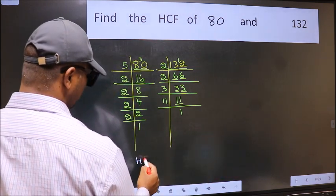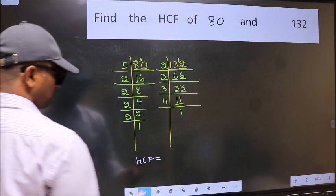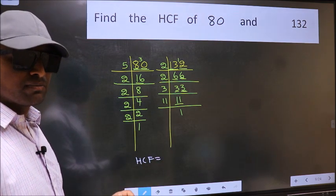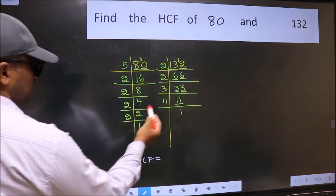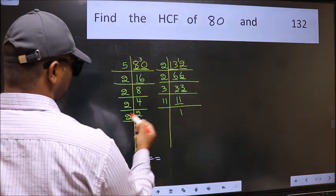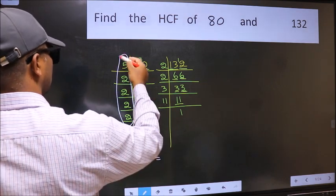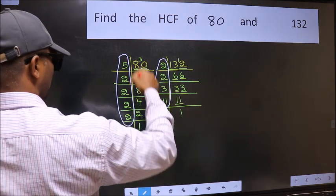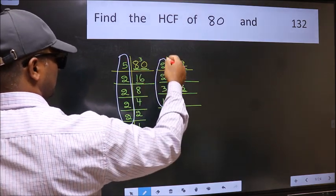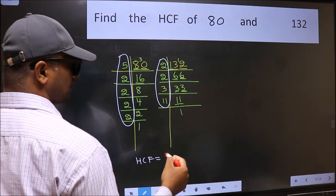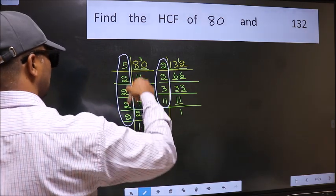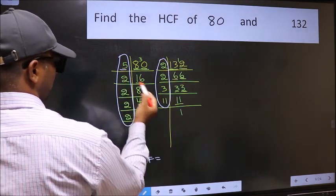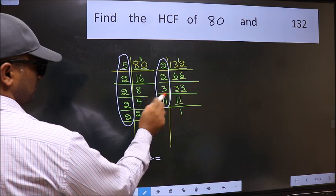Therefore, our HCF is - HCF is the product of the numbers which should be present in these 2 places. That is here and also here. Here and here. So now let us find the numbers which should be present here and here. Starting with the number 5. Do we have 5 here? No.